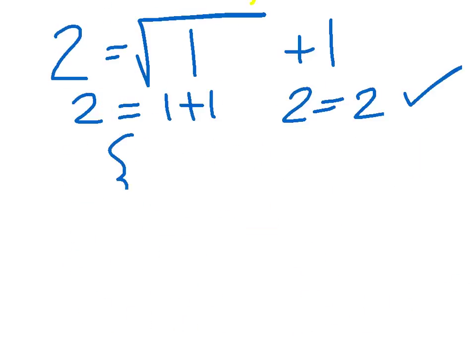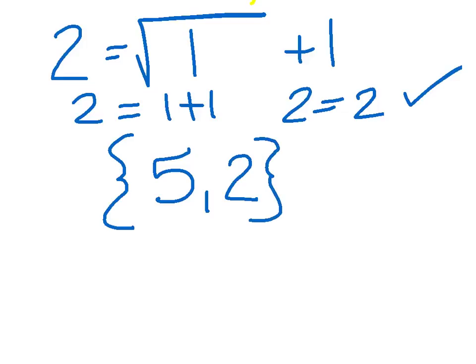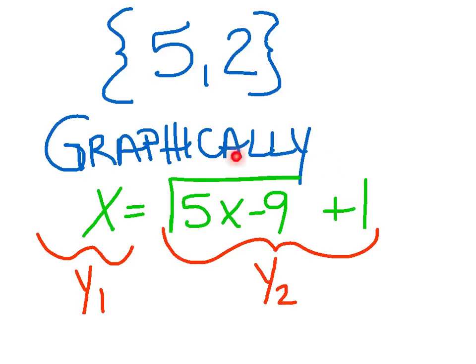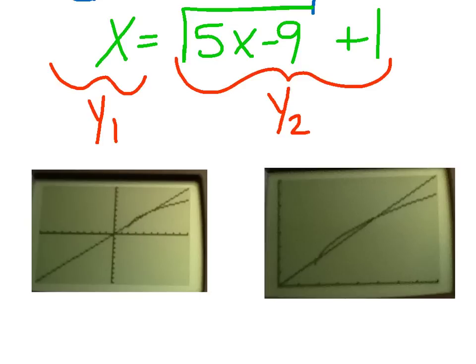So in this case, I have two solutions that worked — both 5 and 2. Let's compare our answer graphically. Remember, throw one side in y1 and the other side in y2. Hit zoom 6 to get your 10 by 10 window. It definitely looks like there should be solutions. In the second picture, I changed the window to focus on the first quadrant — it's easier to see that there are two solutions, one at x equals 2 and another at the fifth tick mark, x equals 5. Indeed, we get our two answers.